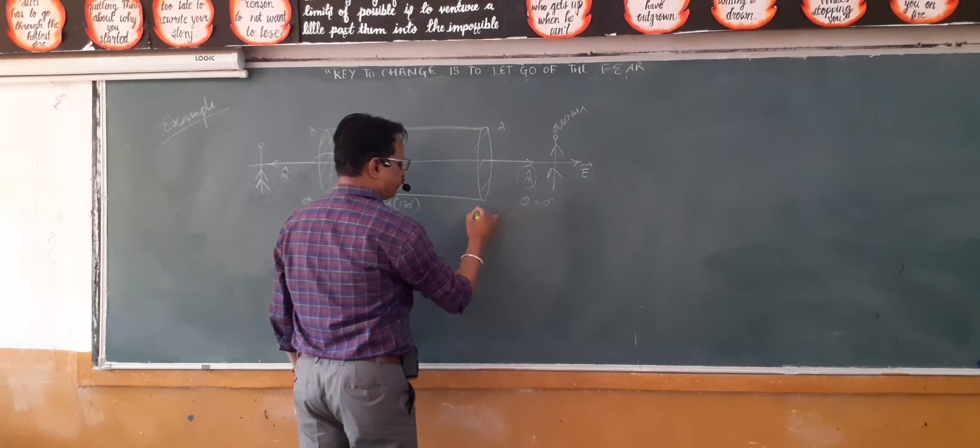In books it is written that normal is drawn outwards. The same problem appears when you calculate magnetic flux. Here flux entering is negative, flux leaving is positive.